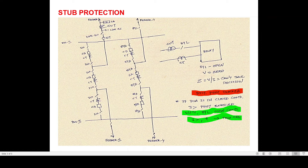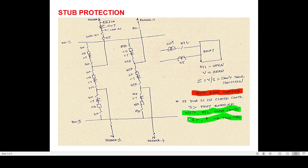So distance protection is blocked. If your bus section is closed — that means if these isolators and breakers are all closed — to protect this section you need a protection system. That protection system must be of overcurrent nature only, because you cannot employ distance protection now since your distance relay doesn't have any voltage input. The 89L open condition and I greater than the threshold — that is overcurrent protection — after a sufficient settable time delay, generally 100 milliseconds, it will issue a trip command.